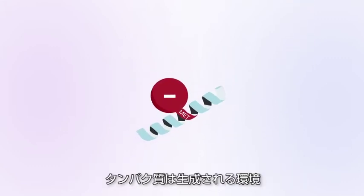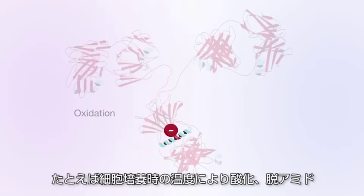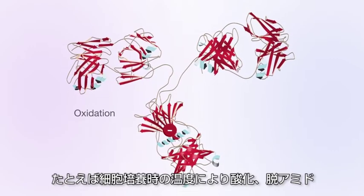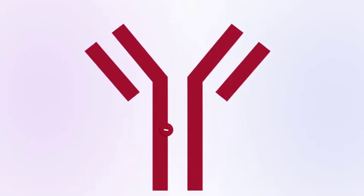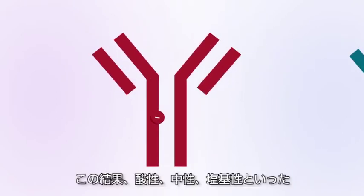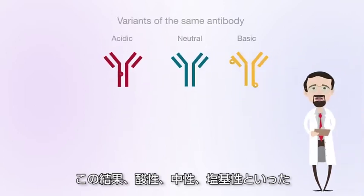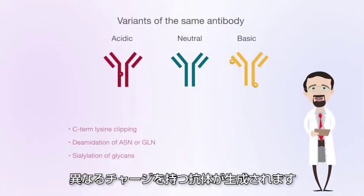Variables in cell culture conditions, such as temperature, can lead to protein modifications such as oxidation, deamidation, or lysine truncation. Modifications can make the protein more basic or acidic. This results in a protein population that is heterogeneously charged.